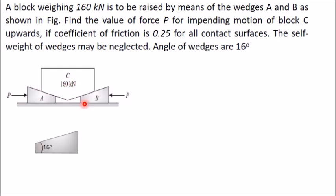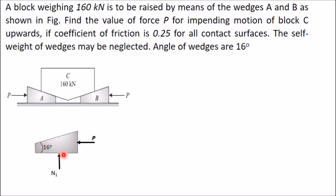First, draw the free body diagram of one of the wedges — here I've taken wedge B. The external applied load P is shown first. The horizontal surface is removed and replaced by a normal reaction perpendicular to that surface, named N1. Since the block tends to move left, friction acts opposite to the impending motion — towards the right — so the maximum friction force is μN1.